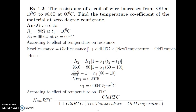Let us start the next numerical based on the effect of temperature on resistance and RTC. The resistance of a coil of wire increases from 80 Ohm at 10 degree Celsius to 96.6 Ohm at 60 degree Celsius. Find the temperature coefficient of the material at 0 degree centigrade.